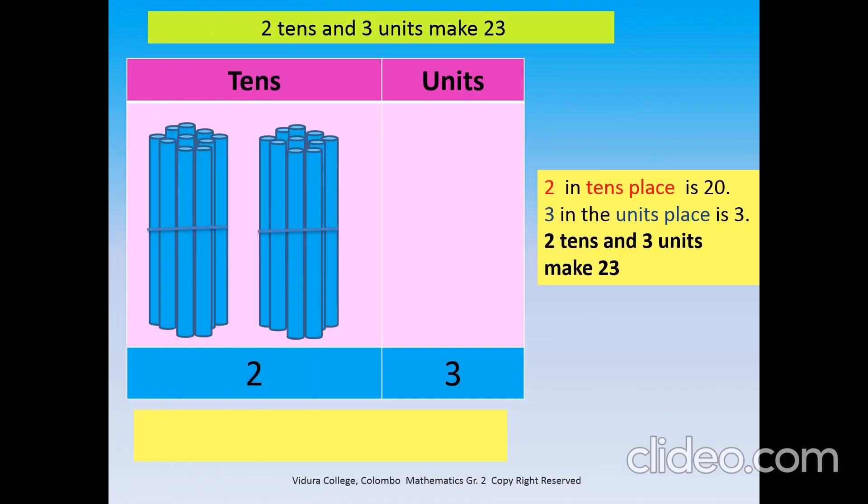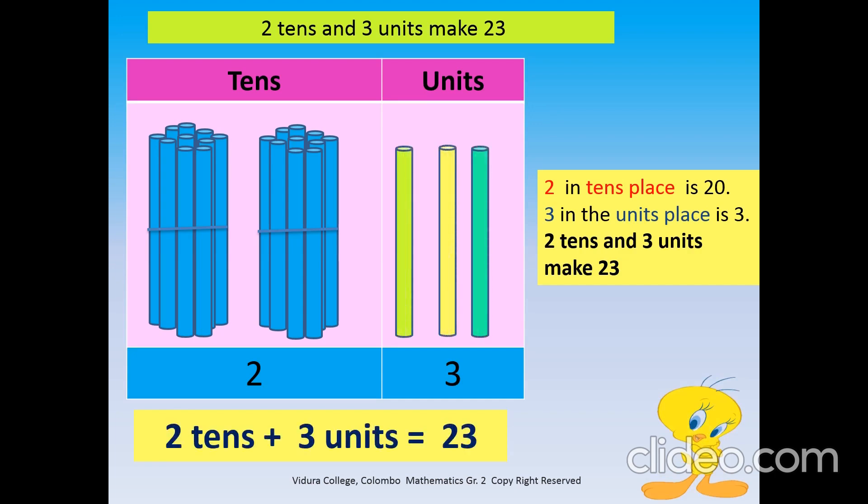We will practice more numbers. Now let's show number 23 in the chart. Two tens in tens column is 20. Three units in unit space is 3. Two tens and three units make 23.